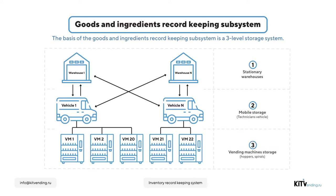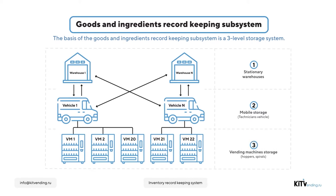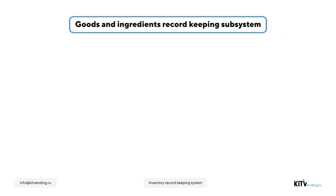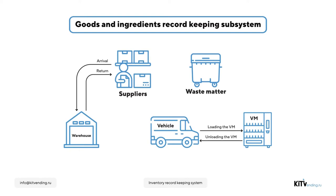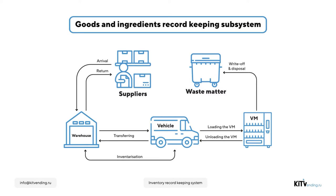Loaded with goods and ingredients for sale, here is a typical goods traffic pattern. The main activities are: the arrival of goods from the supplier, the return of goods to the supplier, the loading of a vending machine, the unloading of the latter, moving goods between warehouses, goods disposal and utilization, and counts of the inventory, vehicles, and vending machines.